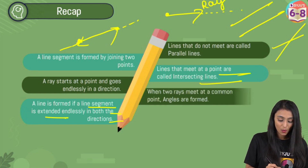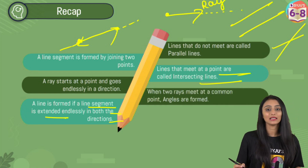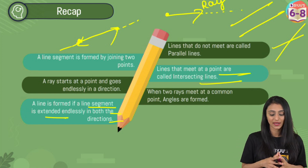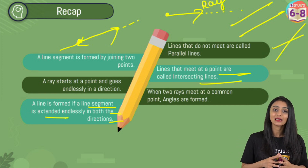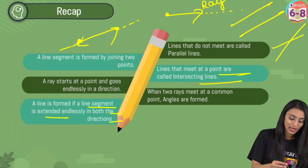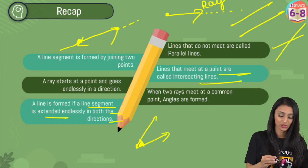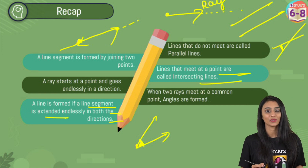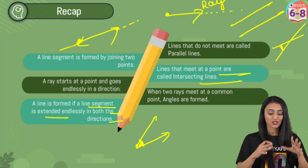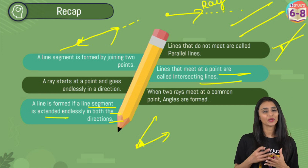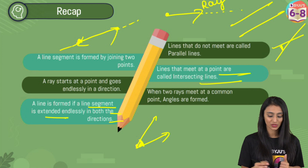Now, talking about what an angle is. When two rays meet at a common point, angles are formed. Like here, if you see, two rays are meeting at this point, so an angle is formed. This was about the basic terminology we use in geometry.